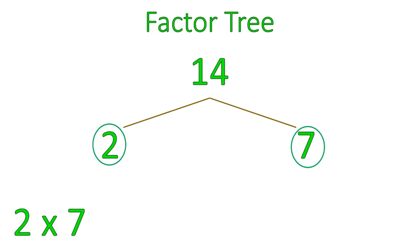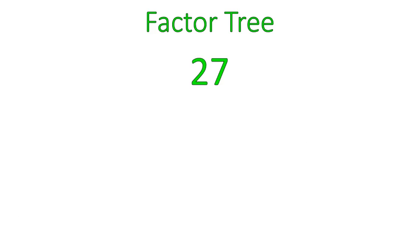Those are the prime numbers that would multiply together to give you 14. Let's do another factor tree with one that's a little bit more exciting. The factor tree for 27. The factors of 27. I think of 3 times 9. 3 times 9 is 27.